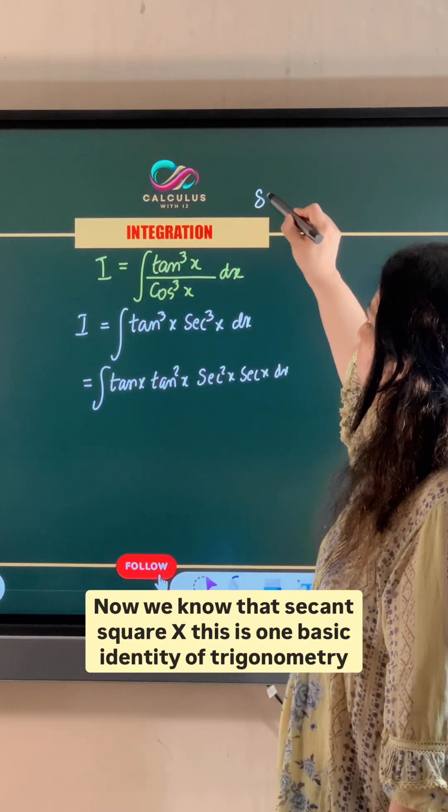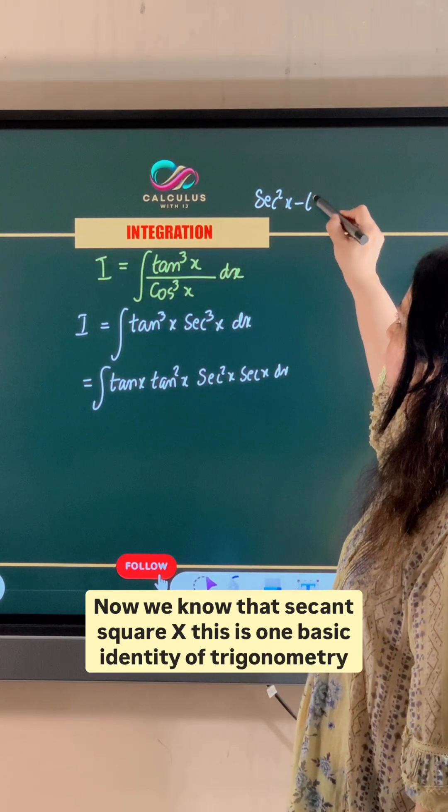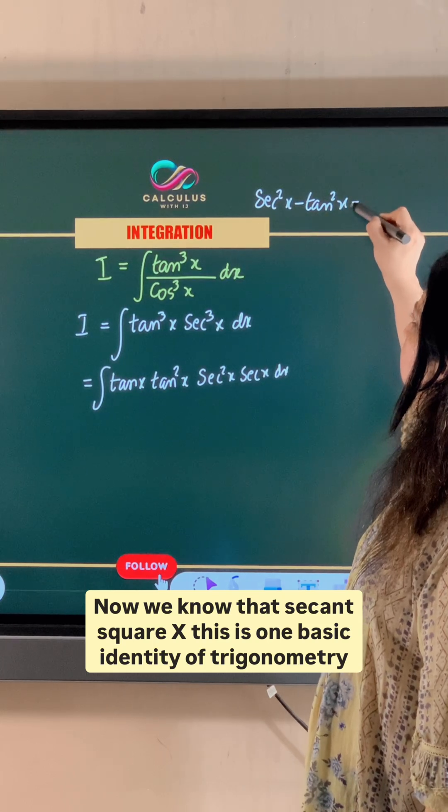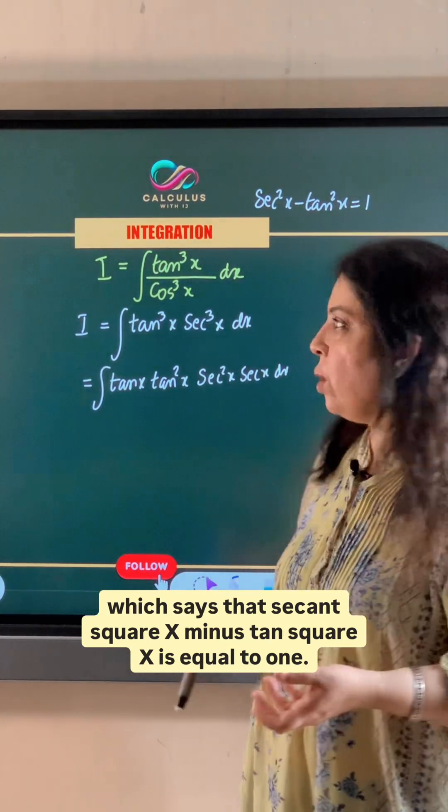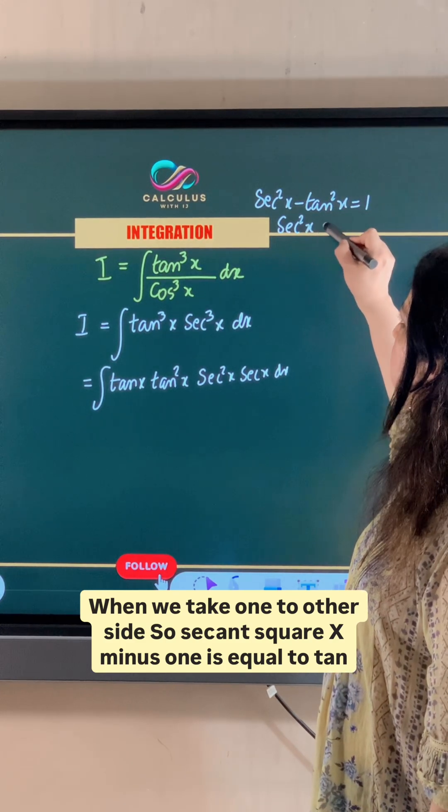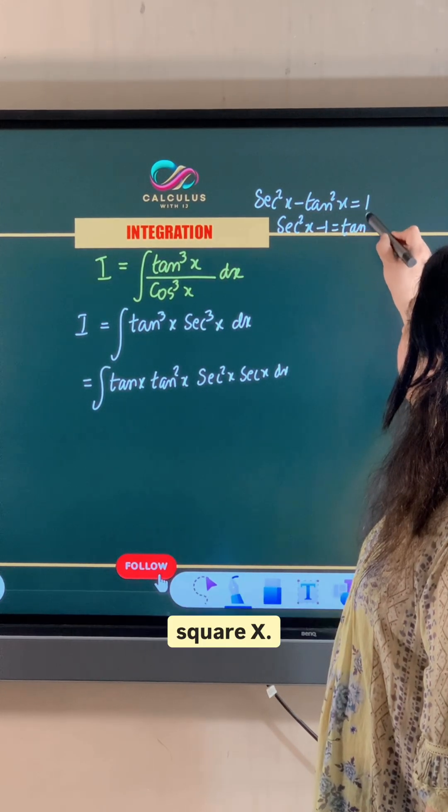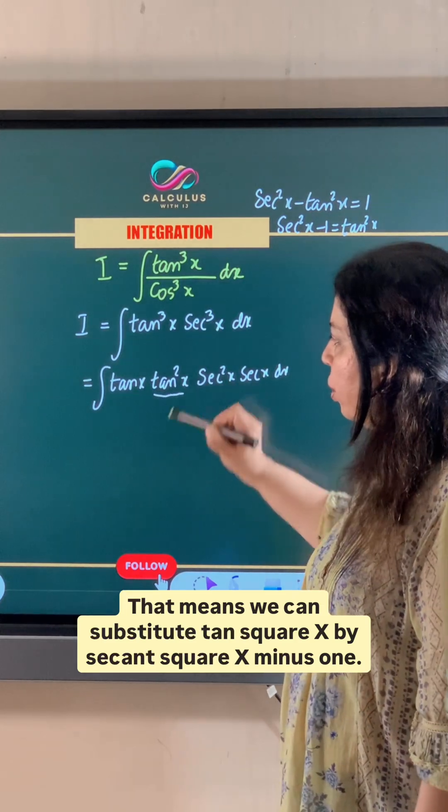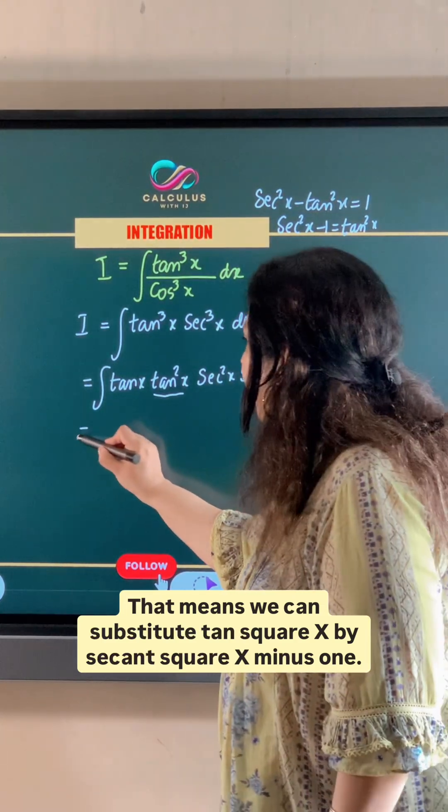Now we know that secant square x, this is one basic identity of trigonometry which says that secant square x minus tan square x is equal to 1. When we take one to other side, so secant square x minus 1 is equal to tan square x. That means we can substitute tan square x by secant square x minus 1.